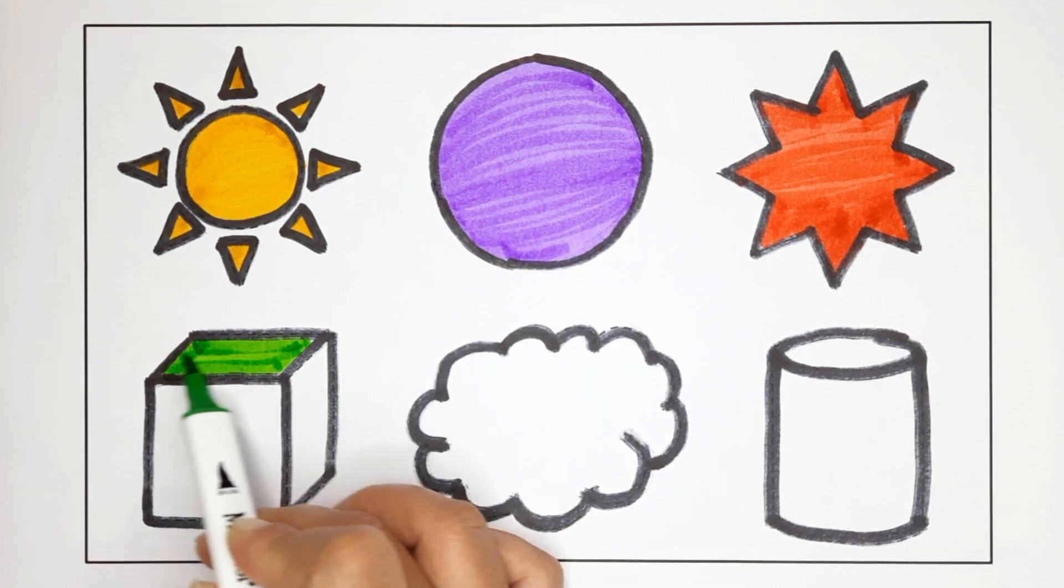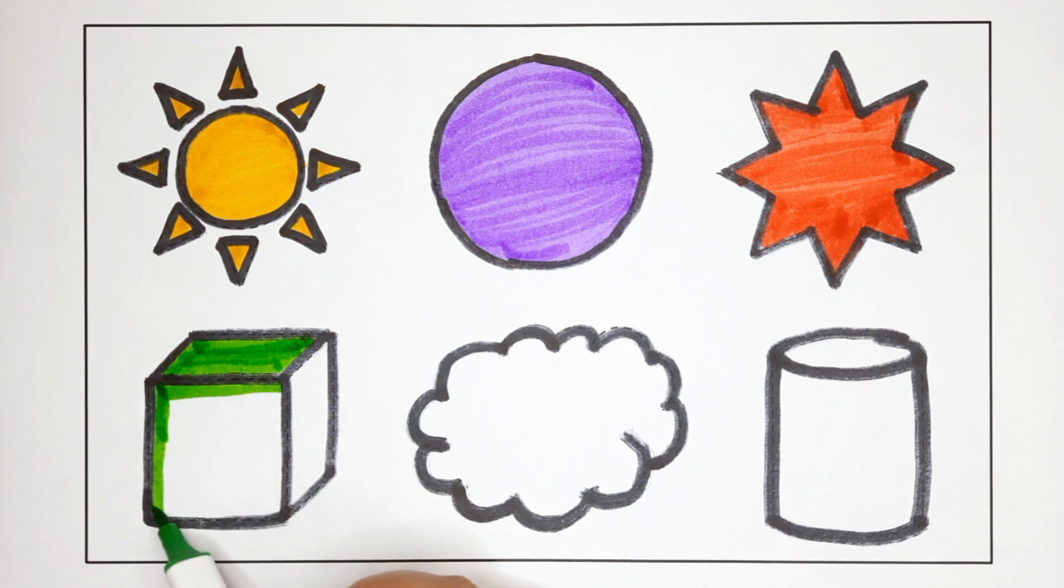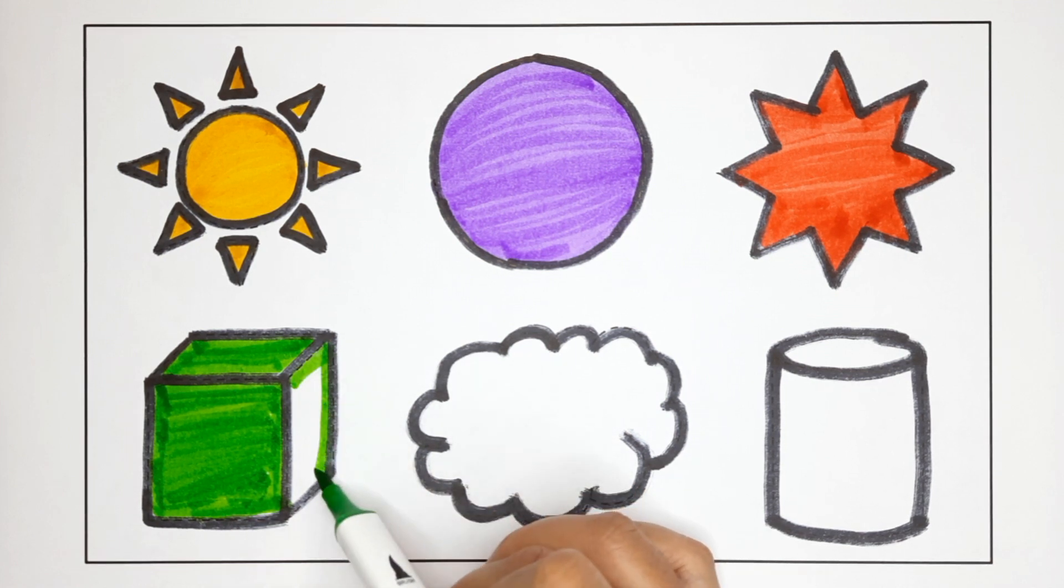Light green color. Cube. This is cube. Cube. The cube is light green color.